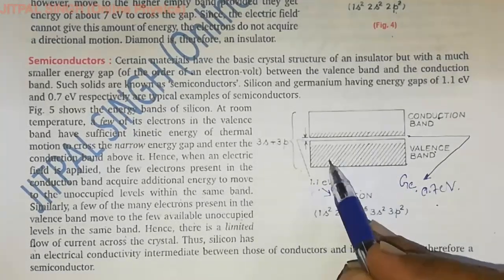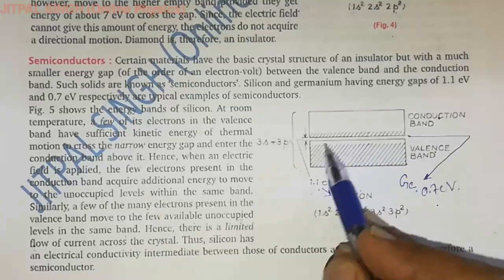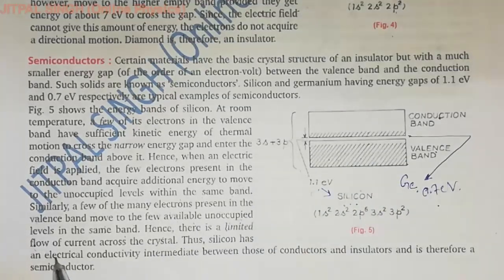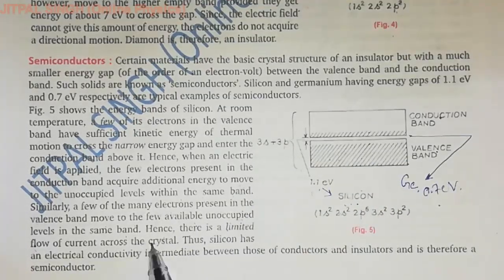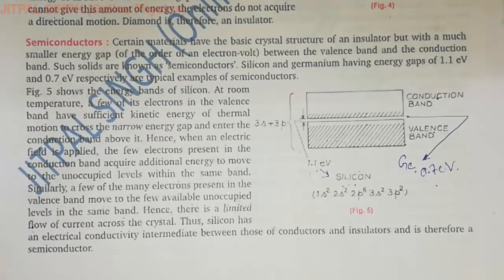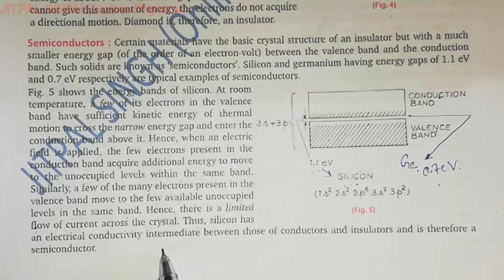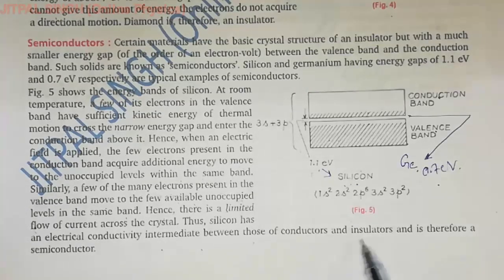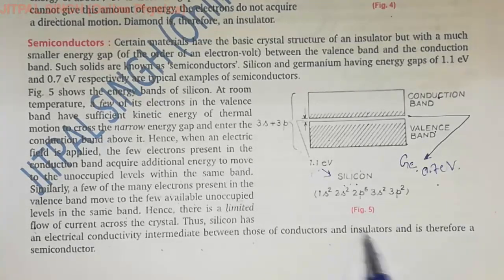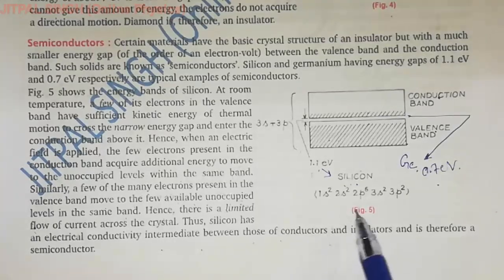These electrons present in the valence band can occupy unoccupied levels, resulting in a limited flow of current across the crystal — current flows, but the value is very low. Thus, silicon has an electrical conductivity intermediate between those of conductors and insulators.